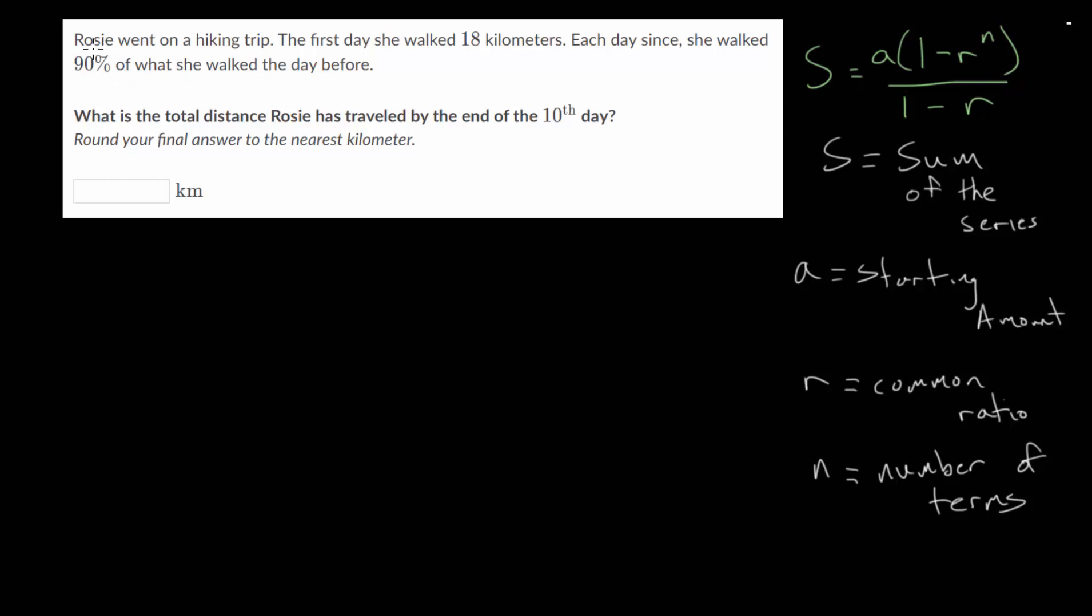So for this problem, Rosie went on a hiking trip. The first day, she walked 18 kilometers. So that's our starting amount, A. Each day since, she walked 90% of what she walked the day before. So we'll take our starting amount and then multiply that by 90%. Remember, 90%, that's just 90 divided by 100, or 0.9. So that is our common ratio here.